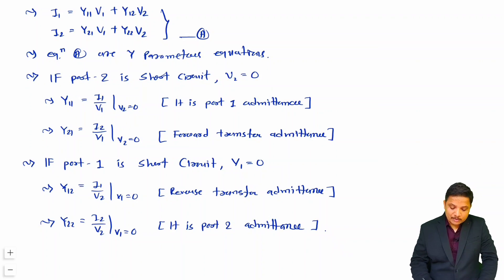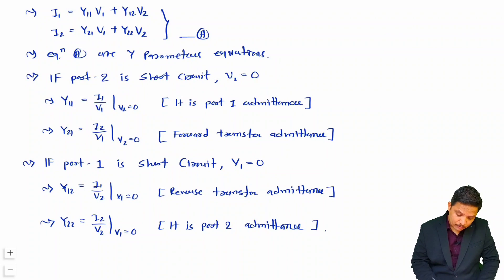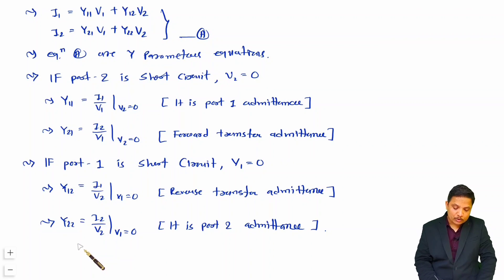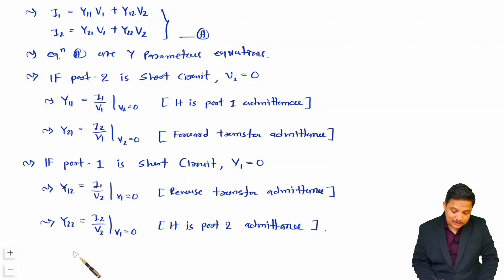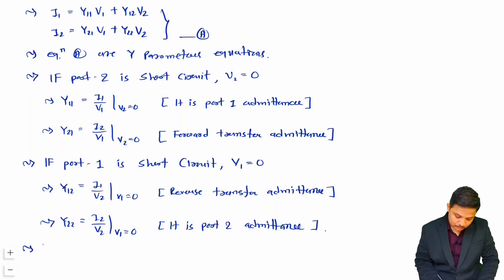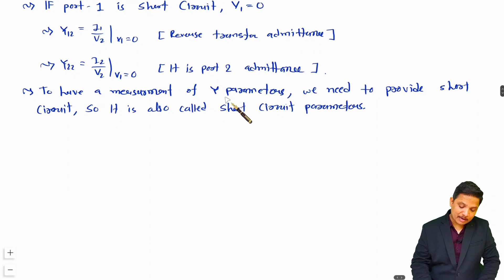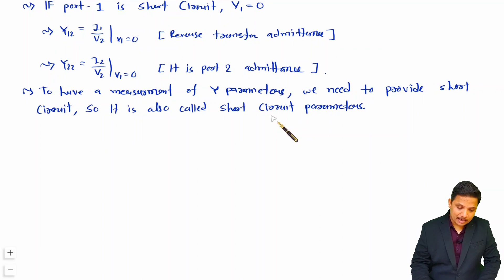Y22 is also referred to as output admittance. Since measurement of Y parameters requires short circuiting port 1 or port 2, Y parameter is also referred to as short circuit parameters.